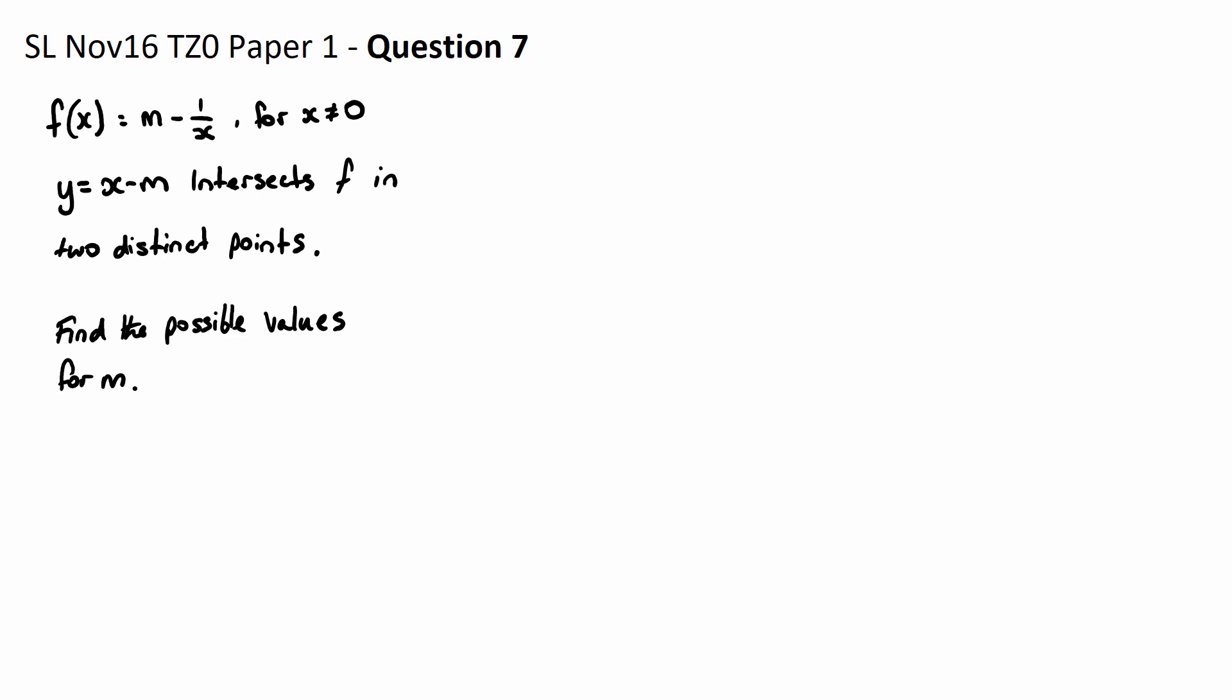Question 7. It says let f(x) equal m minus 1 over x, and it also says the line y equals x minus m intersects this graph of f in two distinct points. Now find the possible values of m.